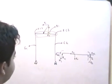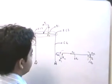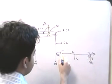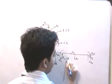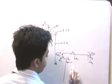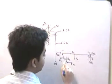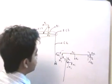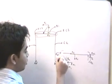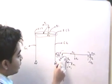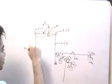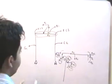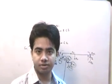Now, how does this beam transfer these reactions to the columns? All three reactions will be transferred to the column, since the joint is essentially in equilibrium. So RV1 in the downward direction, RH1 in the left direction, and M1 being anticlockwise — the column will have a clockwise moment. So due to this load, the reactions M1, RV1, and RH1 are all transferred to column two.